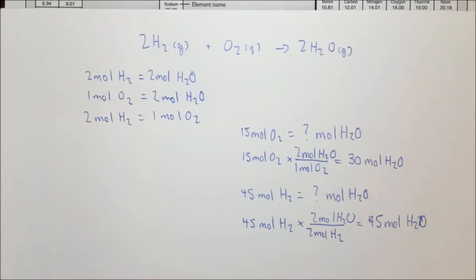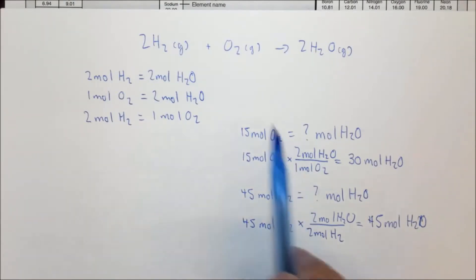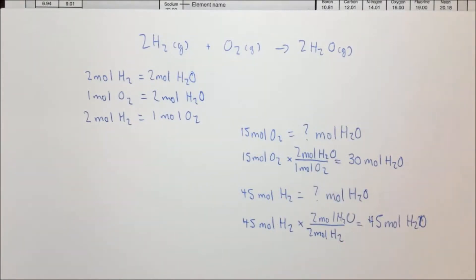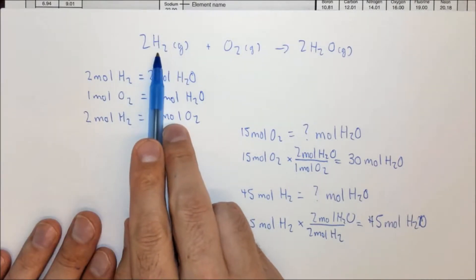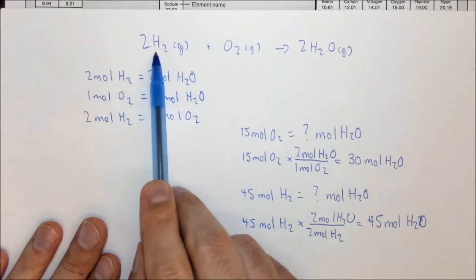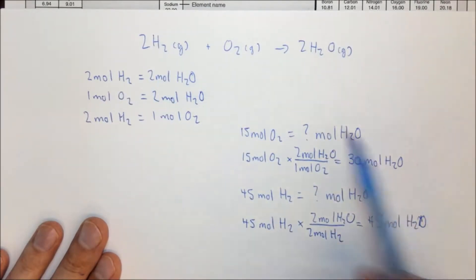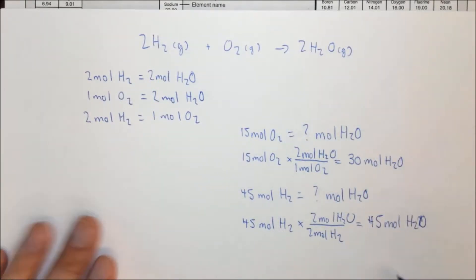Now we have two things we can do: we can convert from grams to moles and moles to grams, and using a balanced chemical equation we can convert from moles of one thing to moles of another. We now need to combine these two ideas to figure out if we start with a certain number of grams of hydrogen, how many grams of water we can make. Let's look at an example of this type of situation.